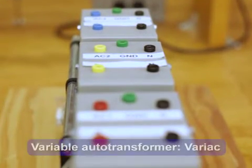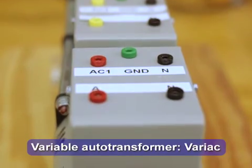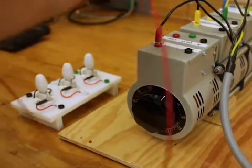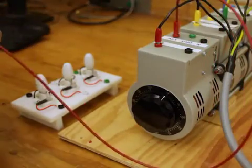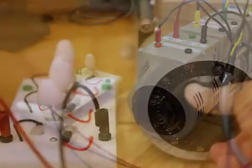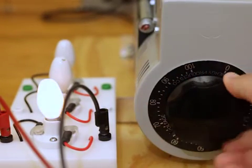Next, a variable autotransformer, also known as a variac, is used to either step up or down AC voltage. This is useful in applications requiring non-standard voltages, or where the voltage must be varied. A knob varies the output voltage between 0 and 100 percent of its maximum value.